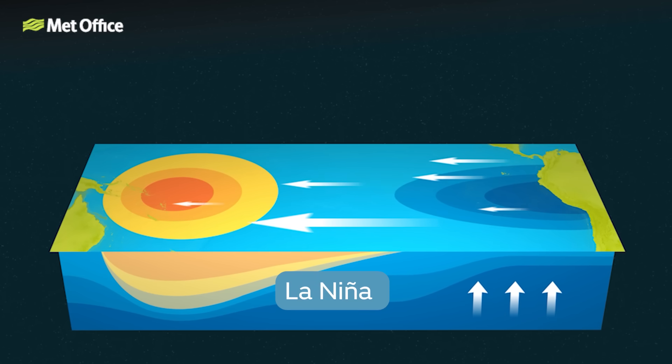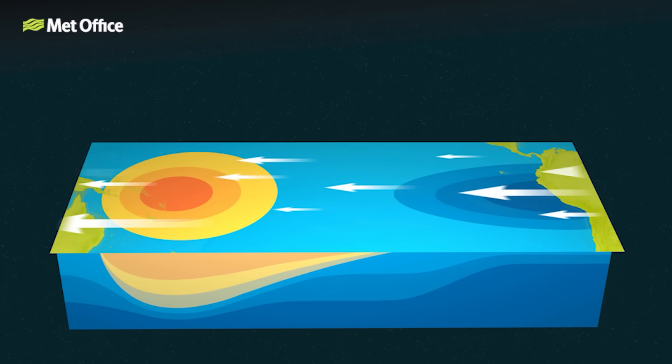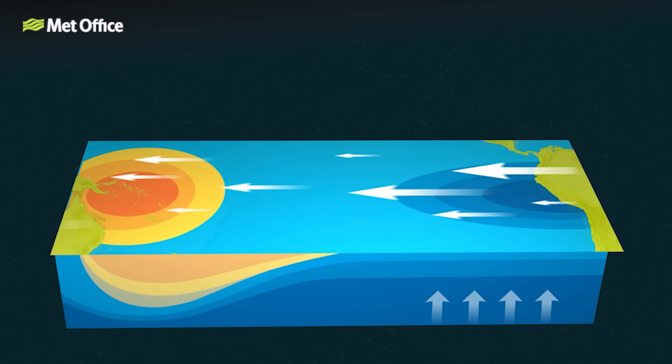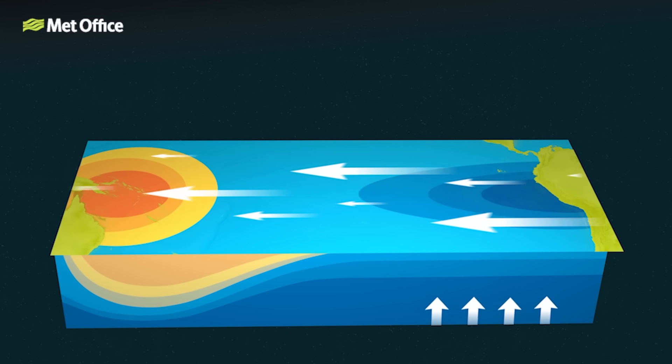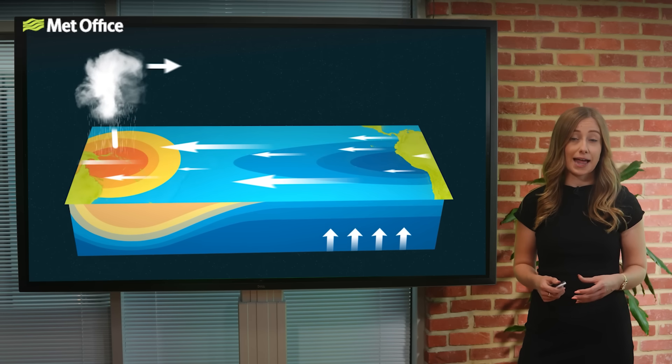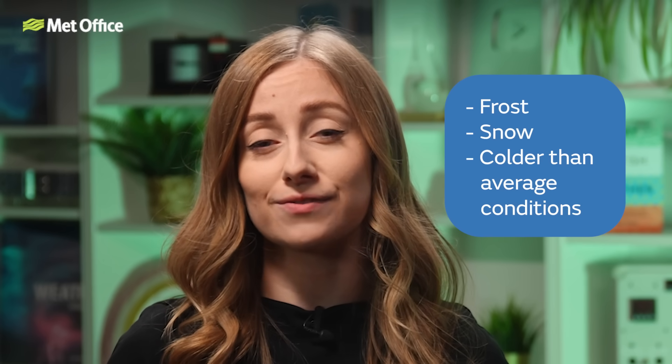Now let's take a look at La Niña. La Niña is the opposite of El Niño. It occurs when sea surface temperatures in the tropical Pacific Ocean drop below average, strengthening the trade winds and cooling the ocean surface. This cooling also shifts global atmospheric circulation patterns. For the UK, La Niña can also influence the position of the North Atlantic jet stream, but in a different way to El Niño, often pushing it further south during early winter. This allows cold Arctic air to flow in from the north, increasing the chance of frost, snow, and colder than average conditions at the start of the season.